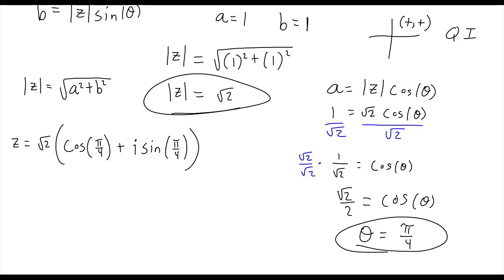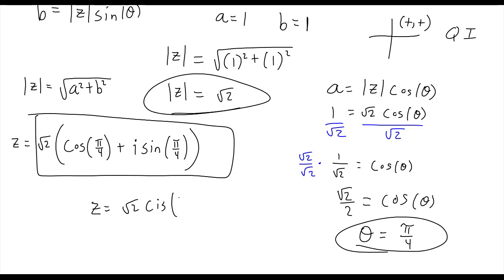And if we want to abbreviate that, we absolutely could, as the square root of 2, CIS pi over 4.